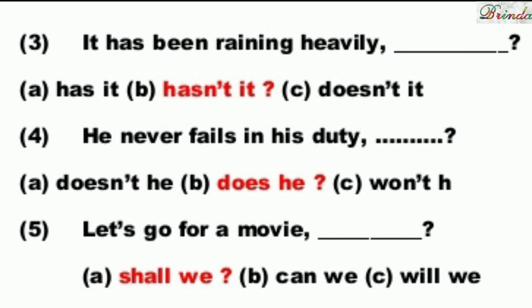Next: It has been raining heavily. 'Has' is present, so the negative tag uses 'hasn't'. Options: has it, hasn't it, doesn't it. The answer is: hasn't it.